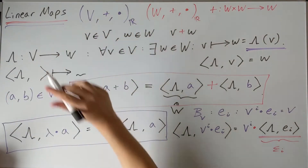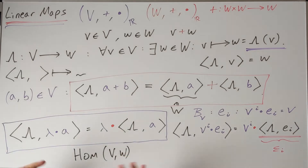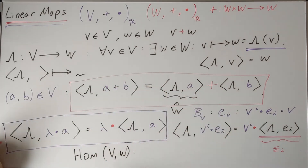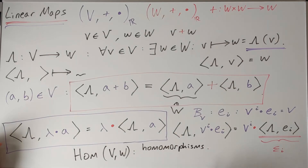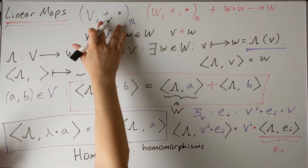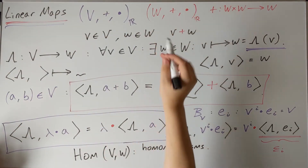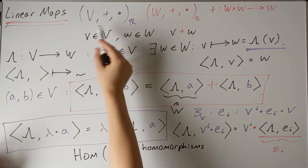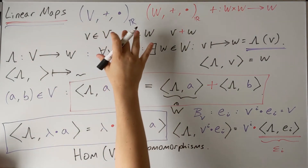We've constructed a map between V and W, and we now call the set of all such maps Hom(V, W) — the set of all linear maps between V and W. In fancier language, these are called homomorphisms, meaning structure-preserving maps. Starting with a vector space, we construct a map that takes us into the same type of algebraic structure. So Hom(V, W) is the set of all maps that preserve the vector space structure — and the homomorphisms between vector spaces are precisely the linear maps.